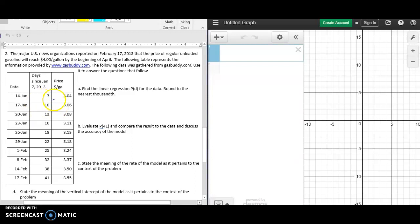The first thing we want to do is enter the data into Desmos. We have to remember that the day since January is our input values and our price per gallon of gas is our output value. In Desmos, we're going to add a new item, add a table, and enter that information just as you see it there.